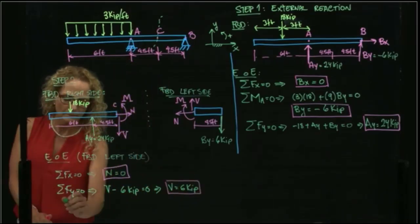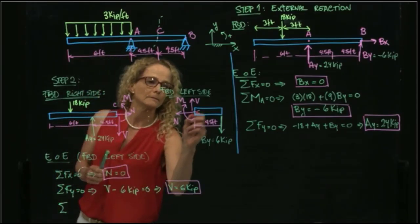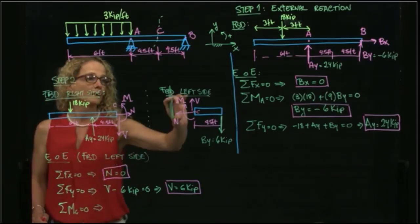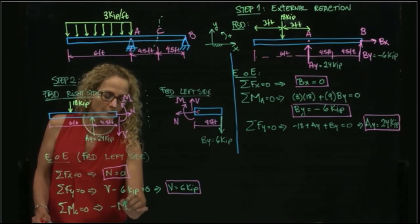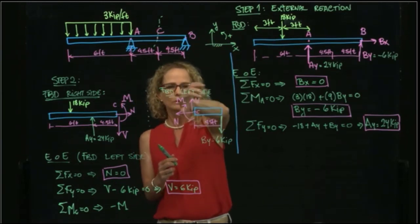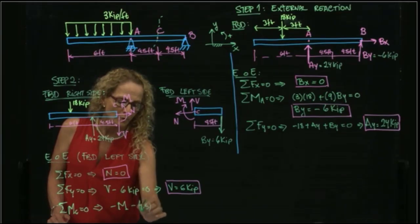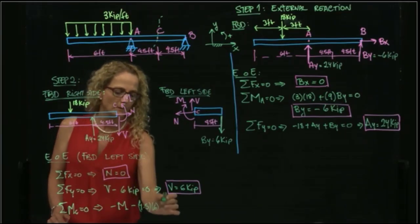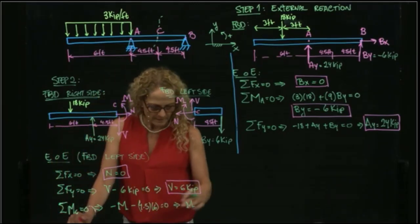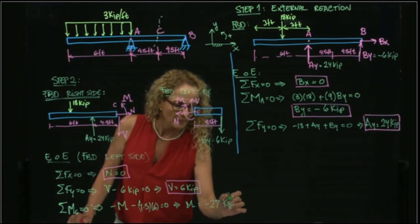And then I take moment. I will take moment at this point of cut, which is C. And I get negative M. Because it's in the opposite direction of my positive. This is positive, this is negative. So it's negative. And then I get also a negative moment produced by the six kip. And this is equals to zero. Therefore, my moment is equals to negative 27 kip per feet.